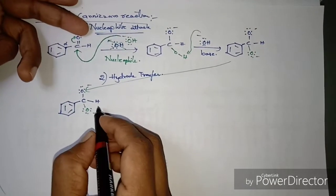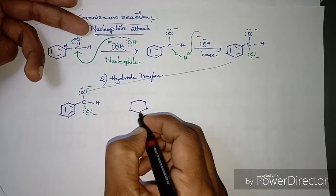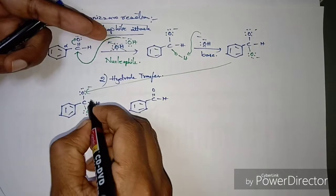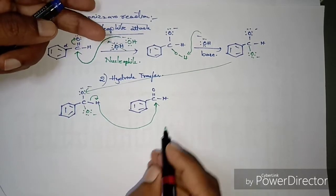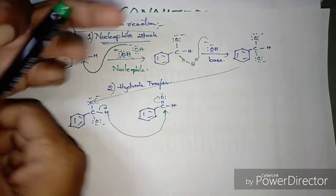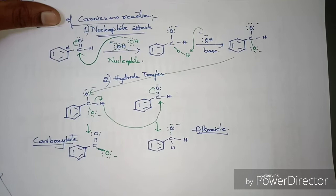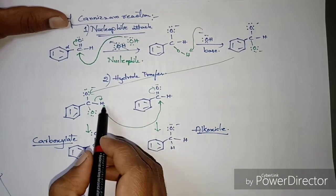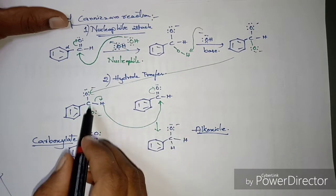The second step is hydride transfer. The diionized form attacks one more molecule of aldehyde with its hydride. The hydride attacks the electrophilic carbonyl carbon of the second aldehyde molecule, pushing the pi bond electrons over to the oxygen atom. This results in the formation of an alkoxide from the hydride attack on the electrophilic carbon.